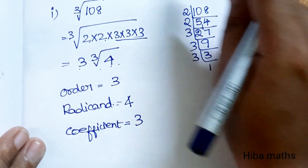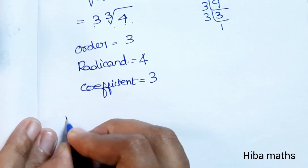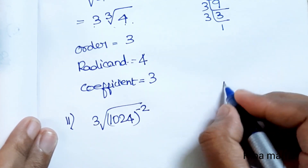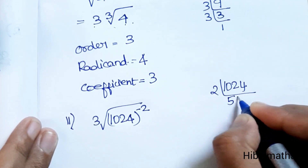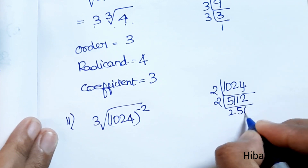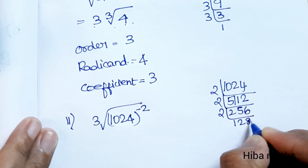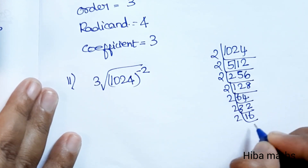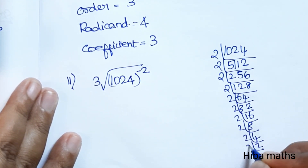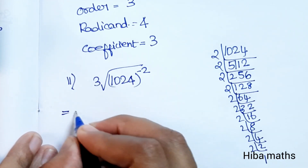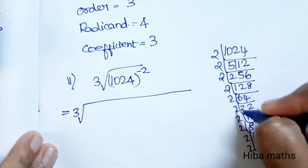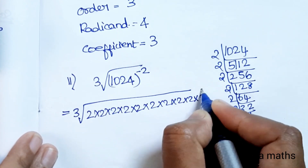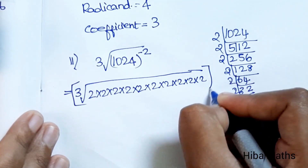Second subdivision: cubic root of 1024 to the power of minus 2. We factorize 1024. 1024 equals 2 to the power of 10, so we have 2 to the 10th power. We apply the second law of radicals and take the whole power, giving us cubic root of 2 to the power of 10 with minus 2 value.